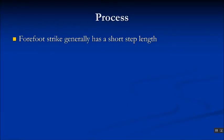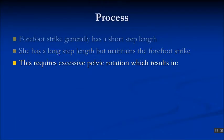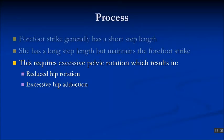So what was the process in this instance? Generally a forefoot strike should produce a short step length; however, she naturally has a long step length but maintains the forefoot strike. The only way she can do this is to have excessive pelvic rotation, which results in reduced hip rotation but excessive hip adduction, and the combination gives the appearance that she has a narrow step width.